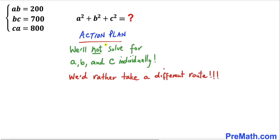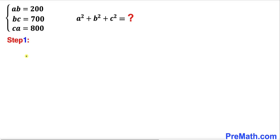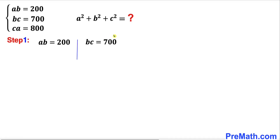Here's our action plan: we will not find the values of a, b, c individually, but take a different route. Let's focus on the first equation, ab = 200 — copied down. Now the second equation, bc = 700 — copied down. And the third equation, c times a = 800 — copied down as well.